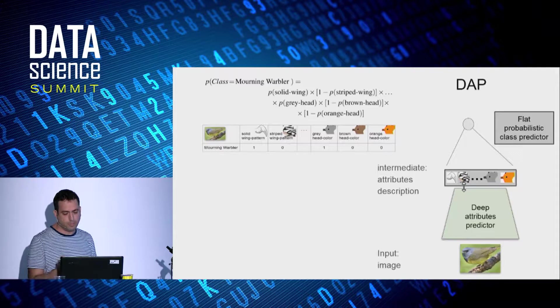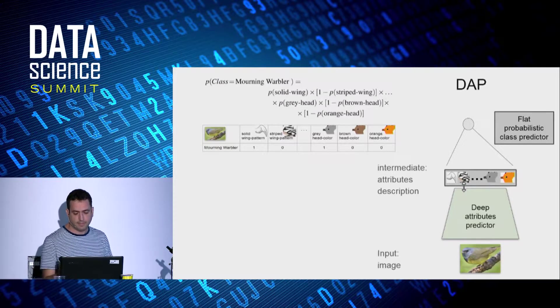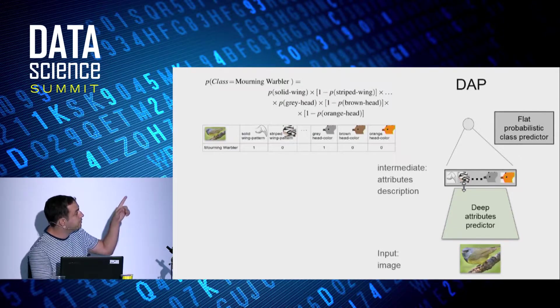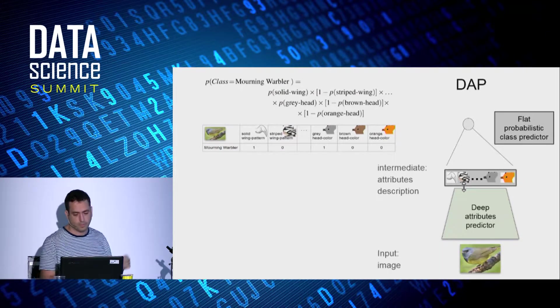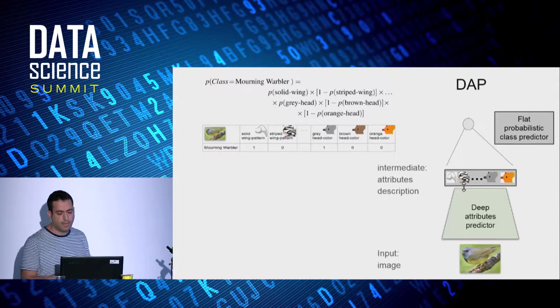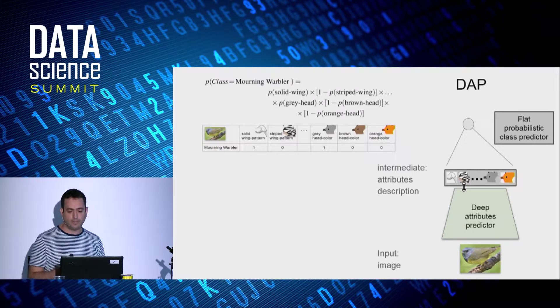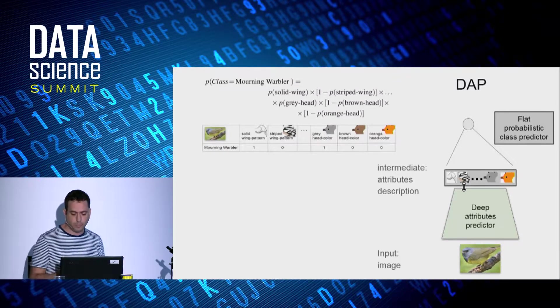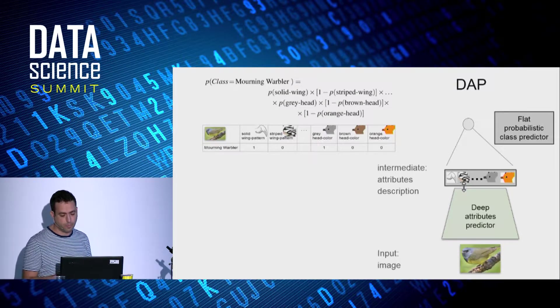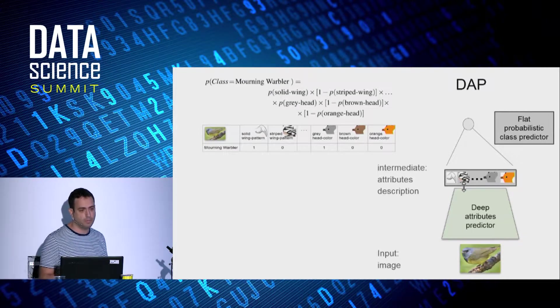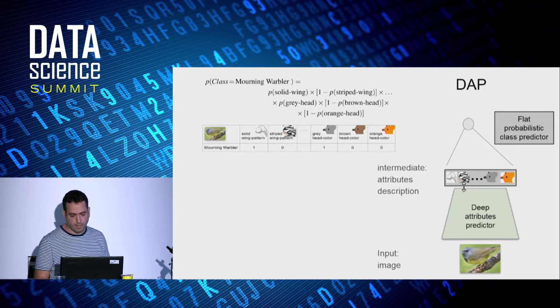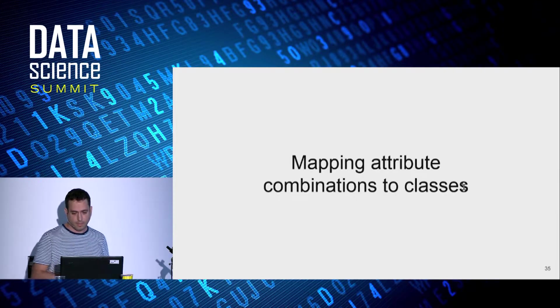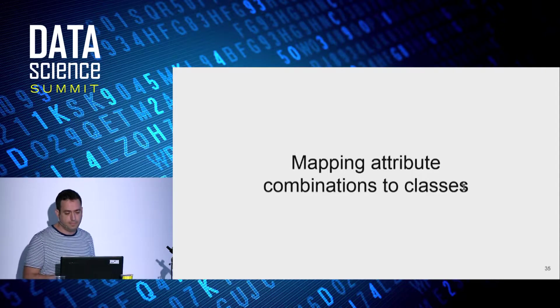So for example, when predicting a mourning warbler, a class that its description has a solid wing but no stripes, you see that the solid has one and the stripes has zero. So for the solid wing attribute, we take the prediction probability as is. For the striped wing attribute, we take one minus the prediction probability because its description for the warbler is false. And for the other attributes, we just continue it.